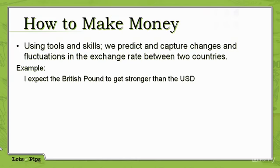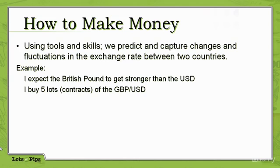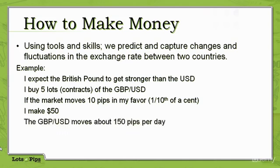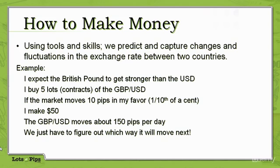For example, if I expect the British pound to get stronger than the US dollar, I'll buy five lots of the Great British Pound/US dollar. If the market moves 10 pips in my favor — which is one-tenth of a cent — and I multiply 10 times 5, I make $50. The Great British Pound moves about 100 to 150 pips a day, sometimes 75, sometimes 200. If the market moves about 150 pips a day, all we have to do is figure out which way it's going to move next.